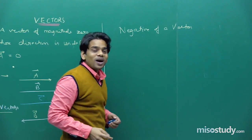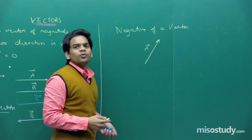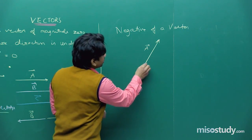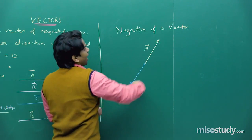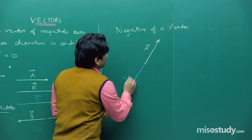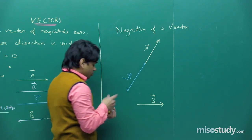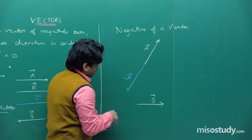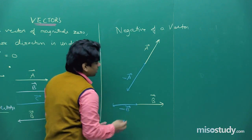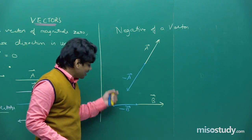The negative of a vector: if you have vector A in a certain direction, to denote minus A, draw a vector on the same line but opposite in sense. For example, if this is vector B, then the vector drawn opposite to it is minus B. The negative of a vector has the same magnitude but acts in the opposite direction.